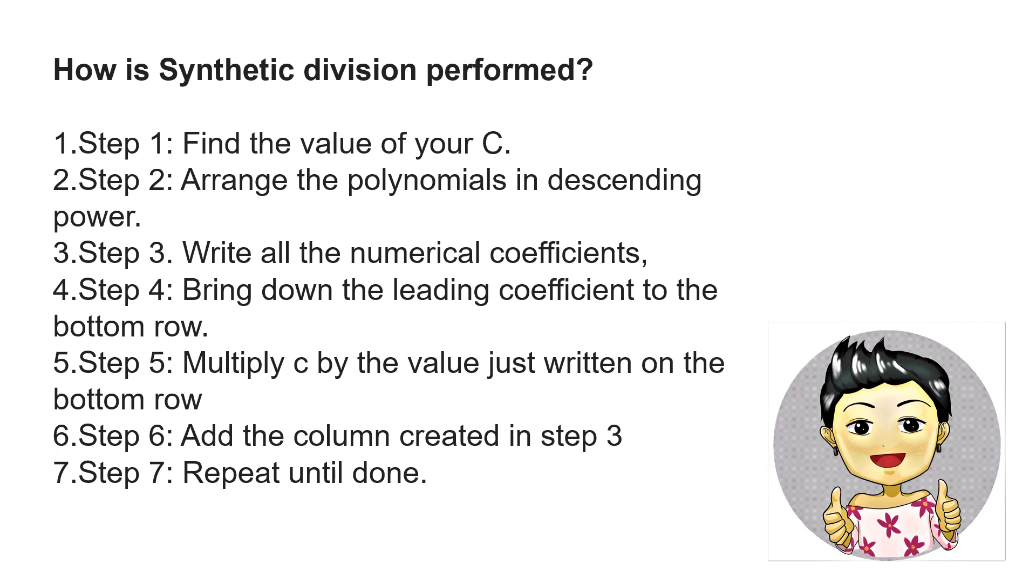Step 4, bring down the leading coefficient to the bottom row. Step 5 is you multiply C by the value just written on the bottom row. Step 6 is to add the column created in step 3. And step 7 is to repeat until done.